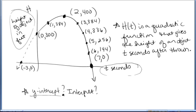First, we want to identify what is the y-intercept and interpret it, meaning what does that point tell us about height and time? Well, the y-intercept is the place where the graph intersects the y-axis, and I clearly see that it is 0 comma 300.